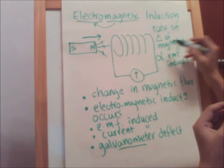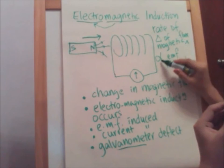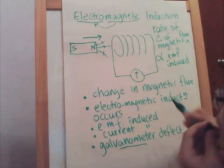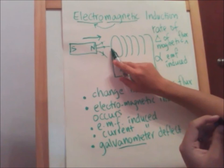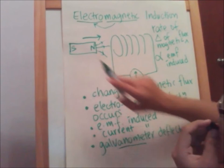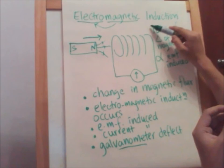So Faraday's Law states that the higher the rate of change of magnetic flux, the higher the induced EMF — they are proportional. There are three ways to increase the induced EMF and current: first, push the magnet in faster; second, use a stronger magnet; third, have more turns in the coil. They all lead to a higher rate of change of magnetic flux.